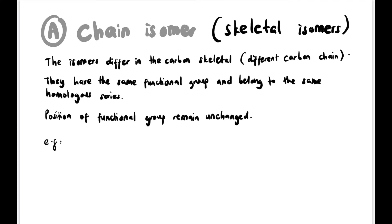Now let's look at chain isomers, also known as skeletal or branch isomers. The isomers differ in the carbon skeleton — their carbon chain differs — but they have the same functional group, belong to the same homolog series, and the position of the functional group remains the same. Only the carbon chain arrangement differs.